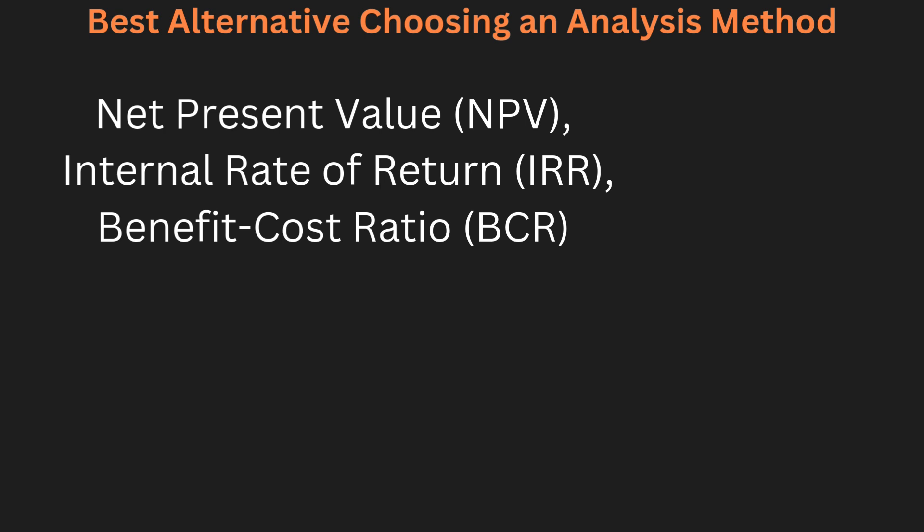Choosing the best analysis method depends on the project goals. Engineers often use the NPV, the IRR, or the benefit-cost ratio. NPV focuses on current cash flows while IRR shows the return rate. The benefit-cost ratio compares benefits to costs. If a project aims for long-term benefits, future worth analysis might be better.